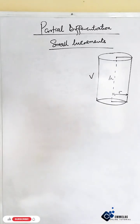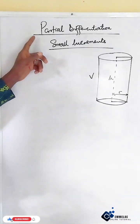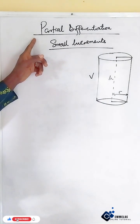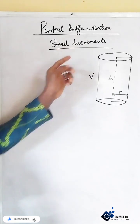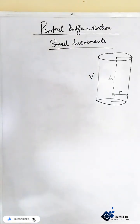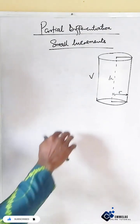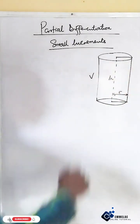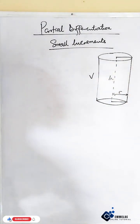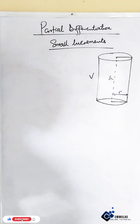Welcome to Emelak Online Tutorial. Now before us, it's still partial differentiation, but today we'll be looking at this topic called small increments. Now how do we get a small increment in the volume of a cylinder? Let us start.